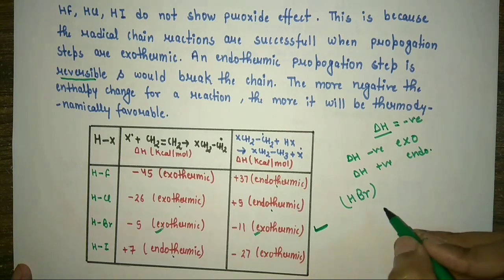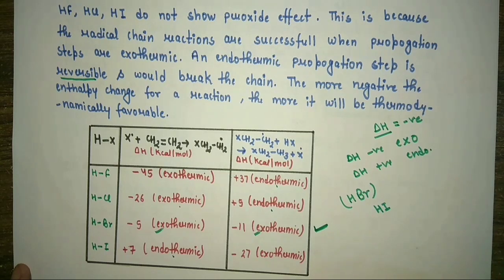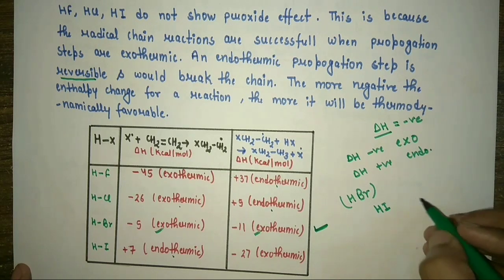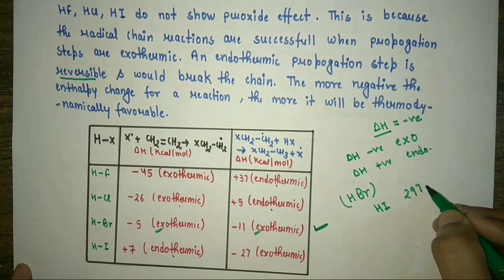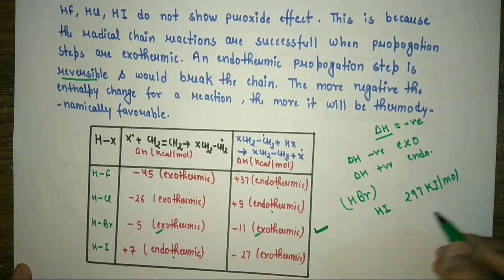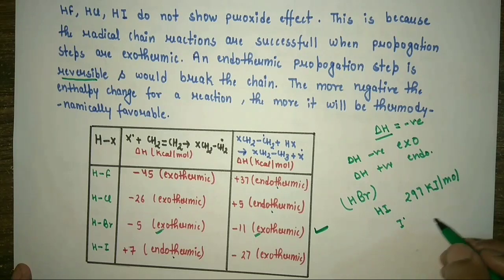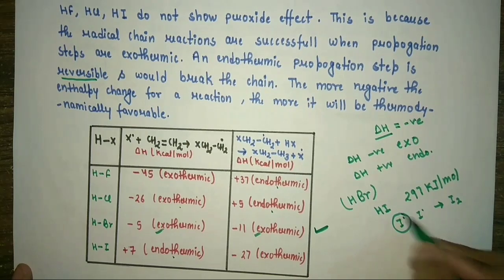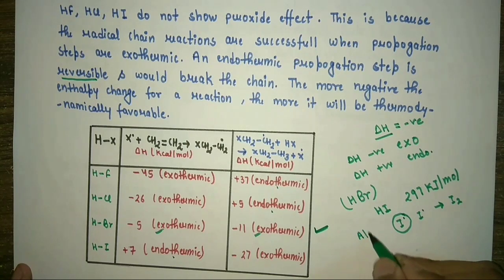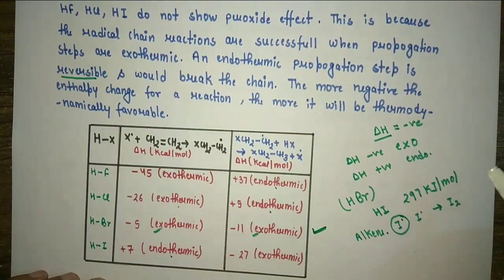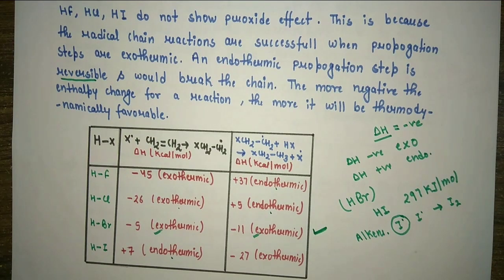Another reason HI does not give the peroxide effect is that HI has a weak bond energy of 297 kJ/mol. The I radical formed combines easily with another I radical to produce I2, and so the iodine radical has no chance to react with the alkene molecule. This is the complete concept of Markovnikov's and anti-Markovnikov's rule. Hope you liked the video. Thank you.